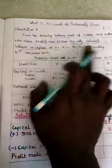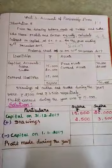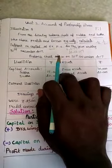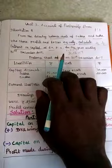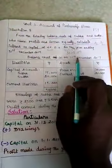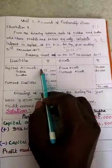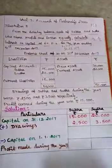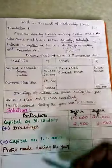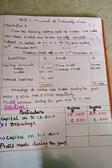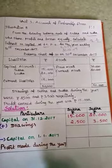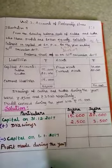They ask us to calculate interest on capital only. When calculating interest on capital, the capital amount should be the opening capital amount. The balance sheet given is a closing-dated balance sheet, so the capital figures of ₹15,000 and ₹20,000 shown are closing capital amounts. We need to calculate the opening capital. There are two ways: one is the Statement of Affairs, otherwise we prepare the Statement of Profit or Loss.